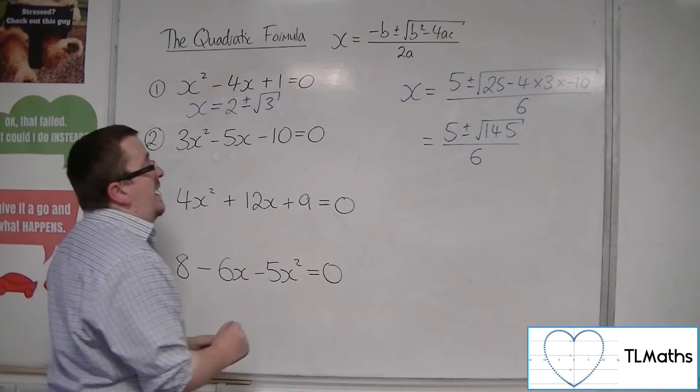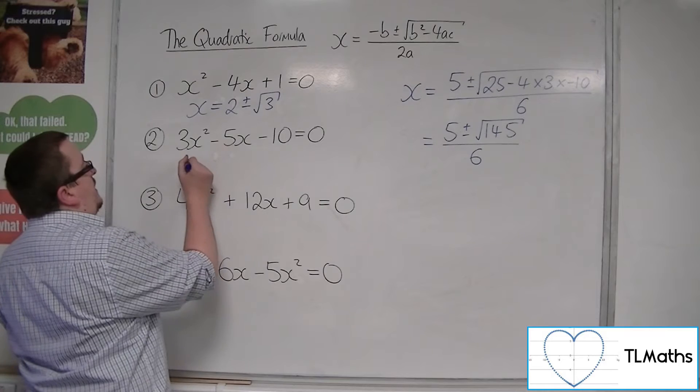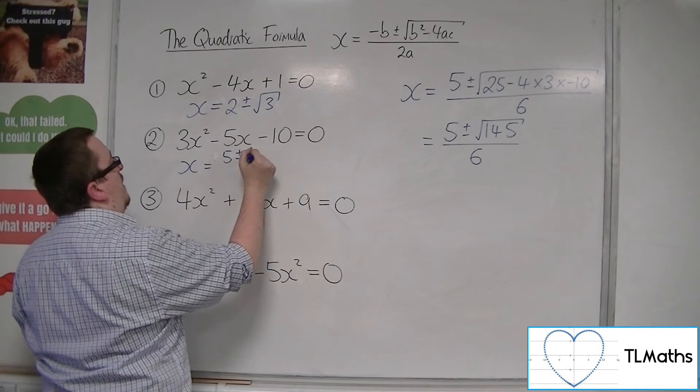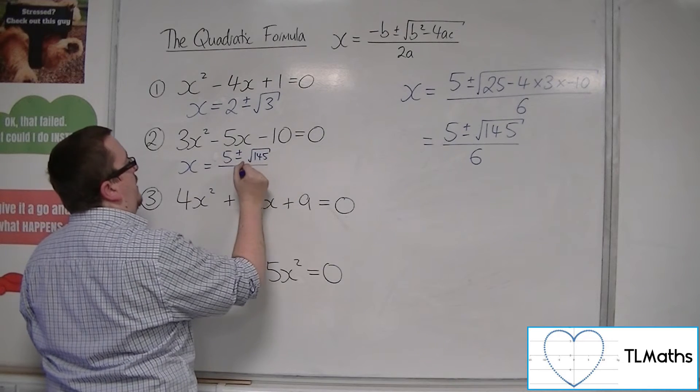Square root of 145, it cannot be simplified. So we can say that x is equal to 5 plus or minus root 145 over 6.